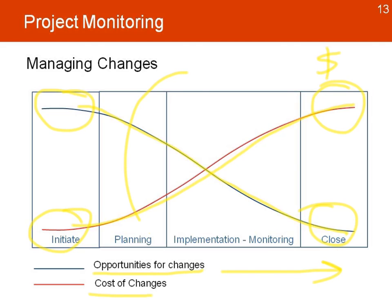Understanding the dynamics between these two curves is important when looking at the project and when we need to focus on opportunities. Right after planning and in the first stages of implementing the project, that's when the project manager needs to look at opportunities to make changes, because the costs won't be that significant. The later it is, the more expensive and the fewer opportunities to make changes.